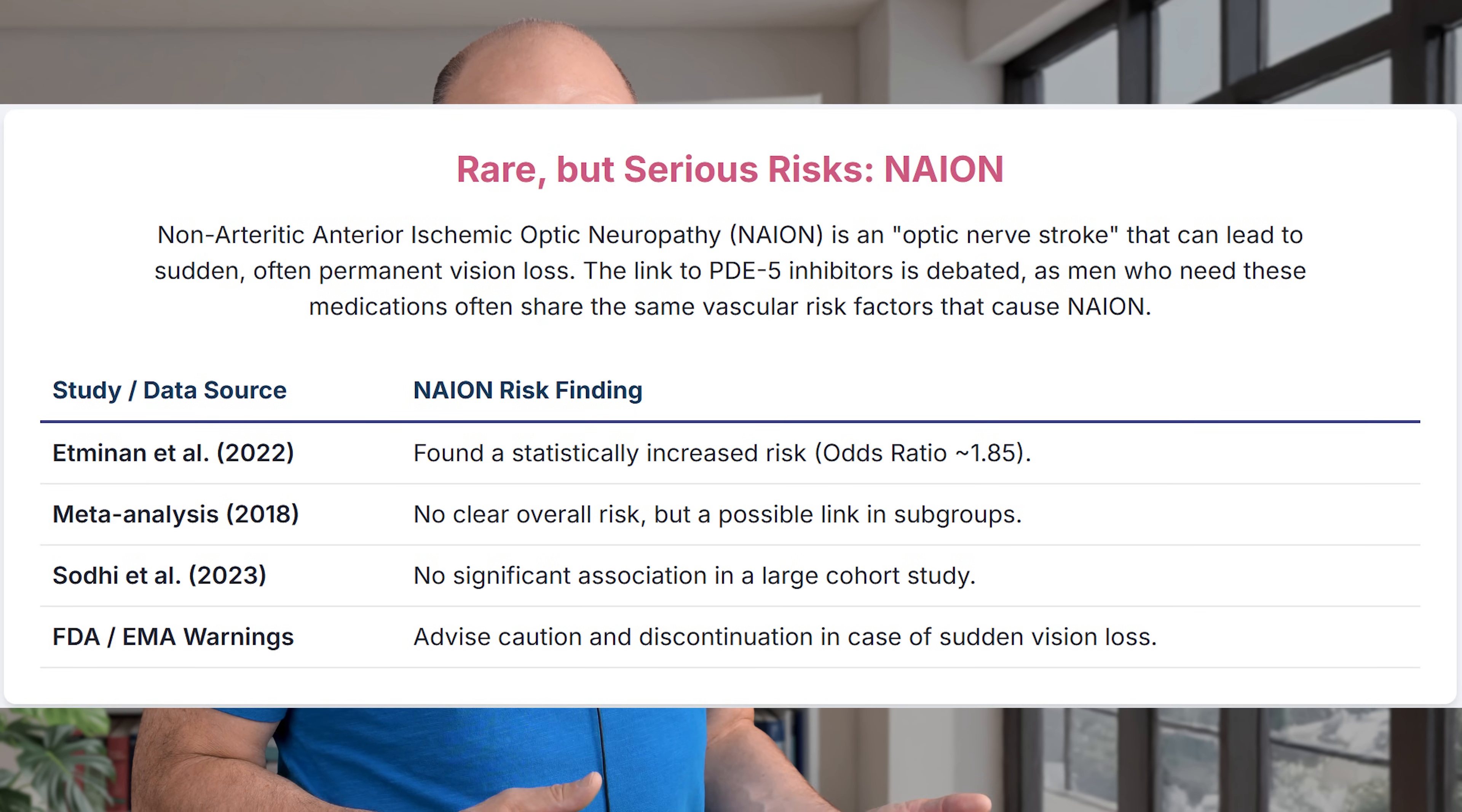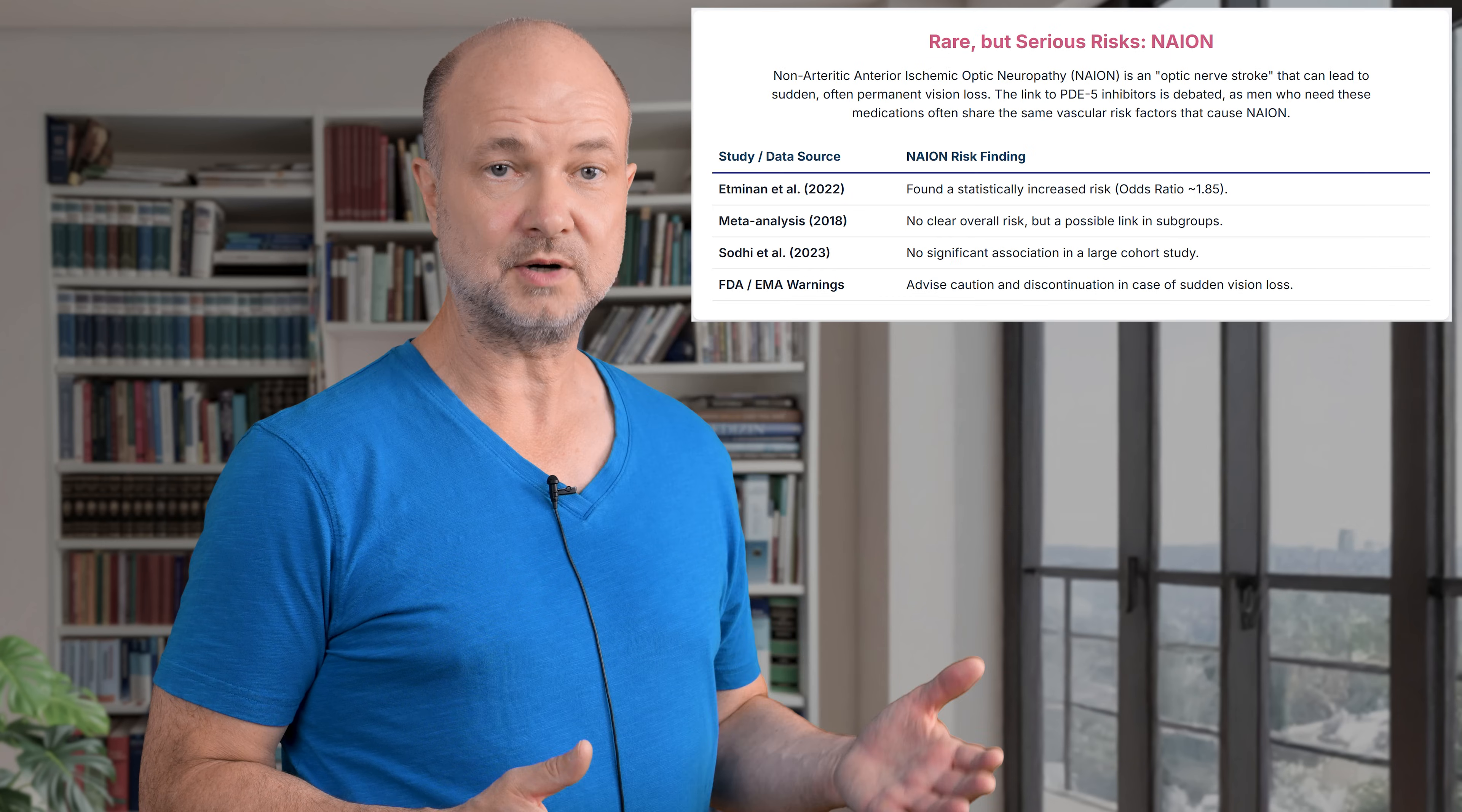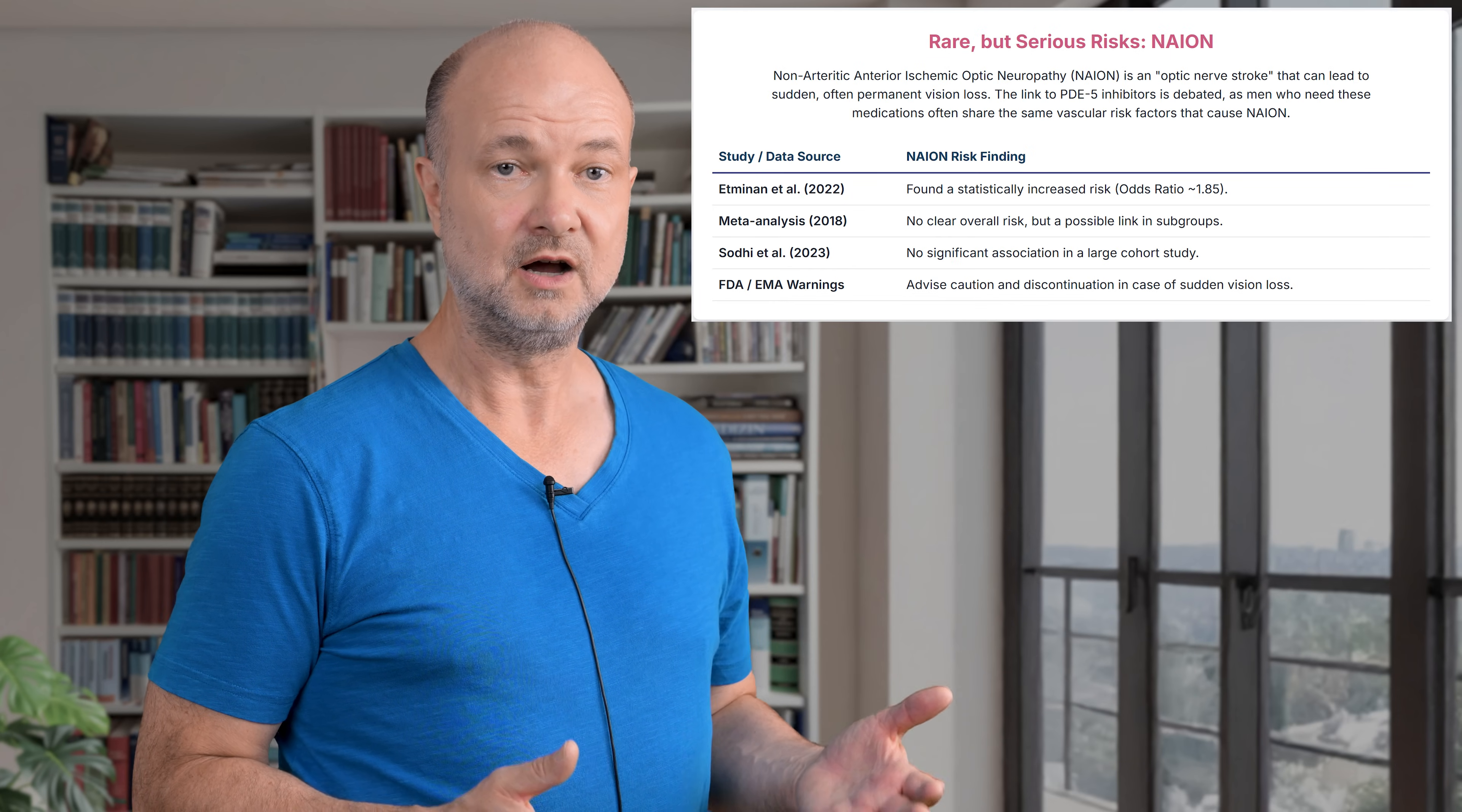However, let's move to the serious risks, the ones that fuel the headlines and the worried comments online. Here we are talking about rare conditions like NAION, which stands for Non-Arteritic Anterior Ischemic Optic Neuropathy, essentially a stroke of the optic nerve and retinal problems such as vein occlusions or serious retinal detachments. Let me stress the word rare.